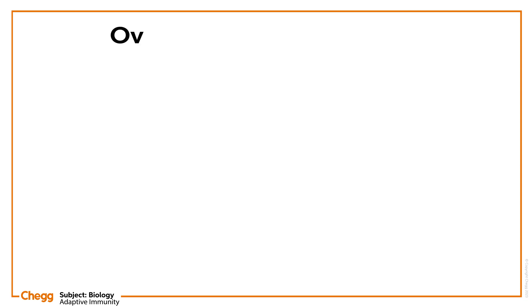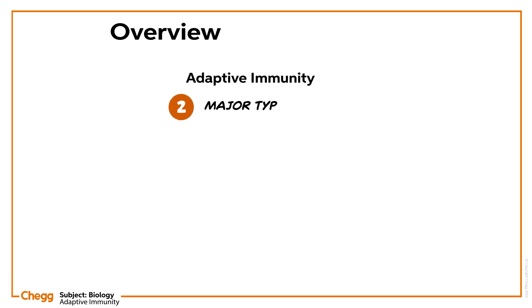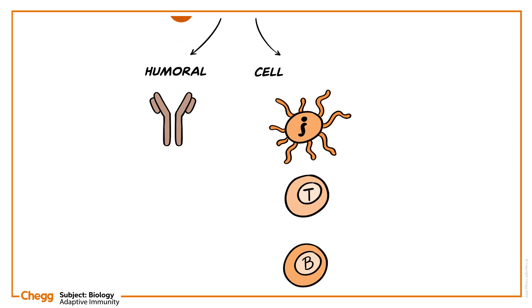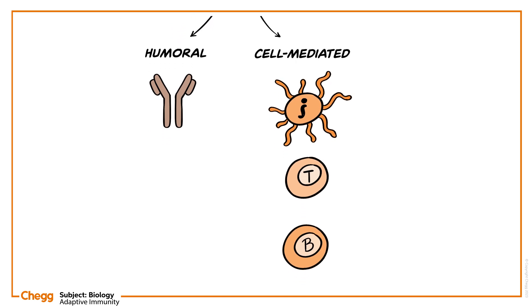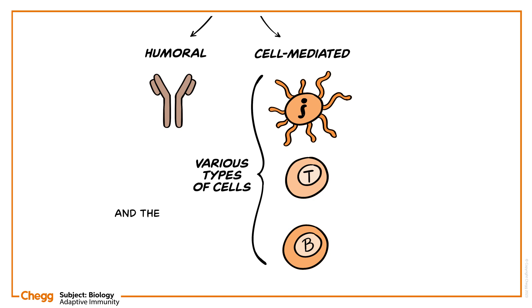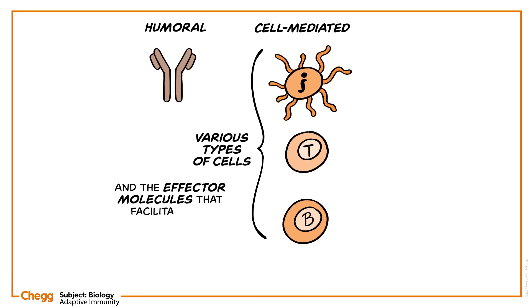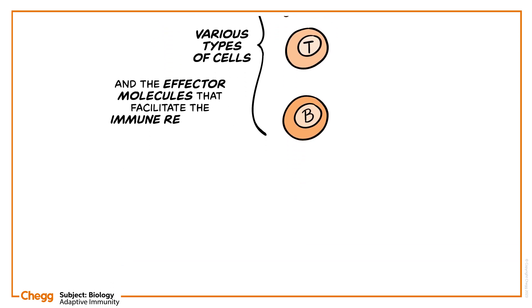In this video, I will describe adaptive immunity and its two major types, humoral and cell-mediated. I'll also discuss the various types of cells and the effector molecules that facilitate the immune response.